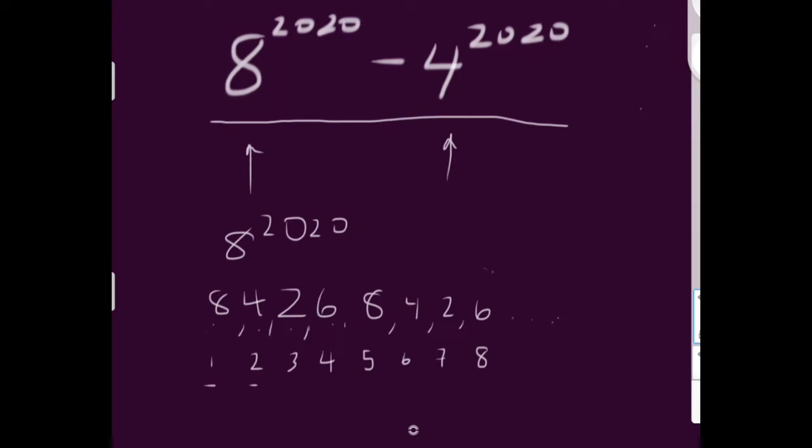And we're trying to find the 2020th. The 2020th number would be 8 to the 2020. And we're going to find the final digit in that pattern. So 8, 4, 2, 6. Finding the 2020th version, we can see that every multiple of 4 ends in 6. And because 2020 is a multiple of 4, we know that it's going to end in 6 as well. So 8 to the 2020th will end in 6.